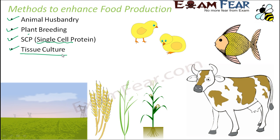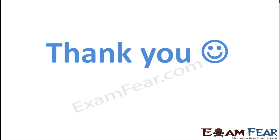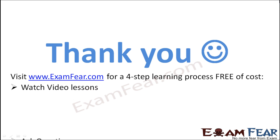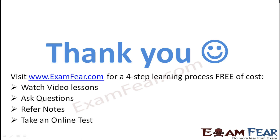These are the four techniques — animal husbandry, plant breeding, single cell protein, and tissue culture — which will help to increase the production of food. We will now discuss each of these methods one by one, starting with animal husbandry. Please visit examfear.com for an easy four-step learning process absolutely free of cost: watch video lessons, ask questions, refer notes, and take an online test. Thank you.